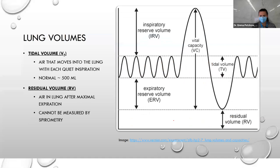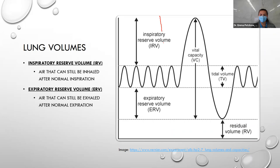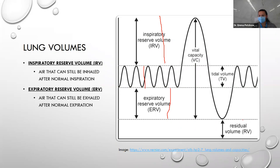The other two volumes: inspiratory reserve volume (IRV) is the air that can still be inhaled after normal inspiration — it's that extra deep belly breath beyond your tidal volume. Expiratory reserve volume (ERV) is the extra amount of air you can blow out after your normal exhale. Residual volume is what's left over after that expiratory reserve — it's what remains in the lung after a maximal exhale.